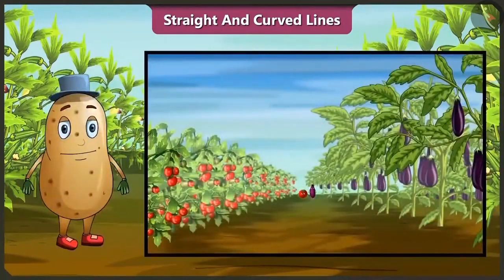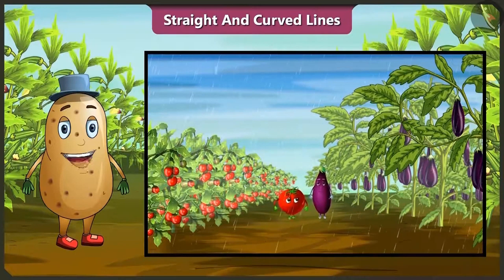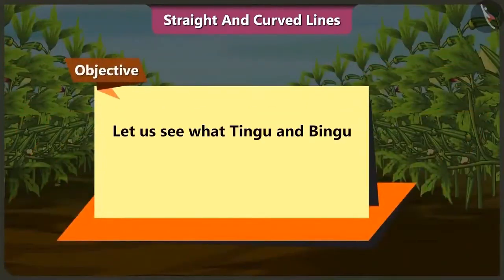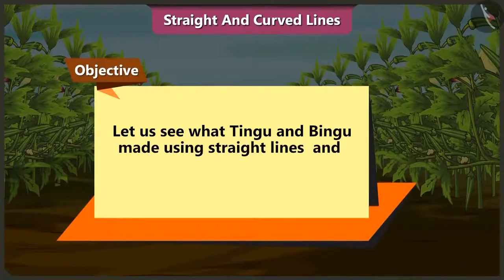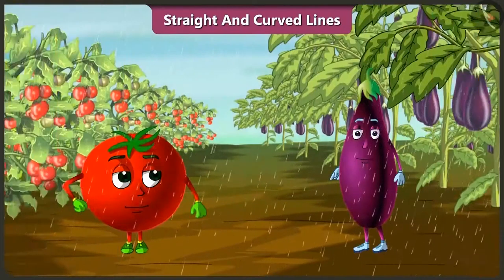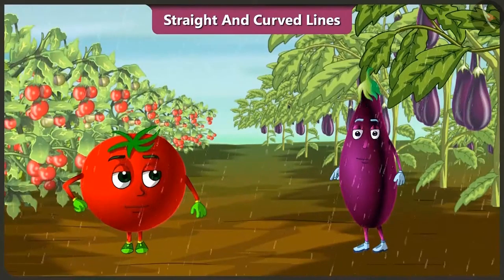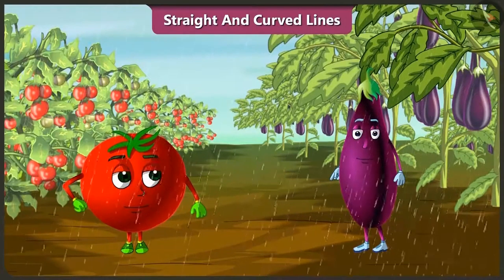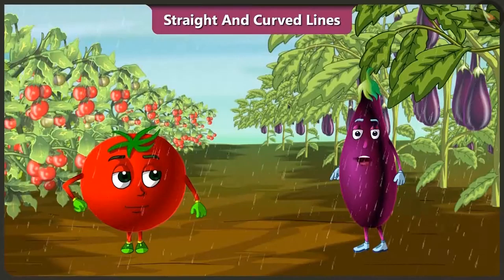Friends Tingu and Bingu have gone for a walk without taking the umbrella. Suddenly it starts raining. Let's look at what Tingu and Bingu made using straight and curved lines to protect themselves from rain. Bingu says: before it starts raining heavily, please find a plan to protect ourselves. Bingu replies: yes, I will make an umbrella very quickly.